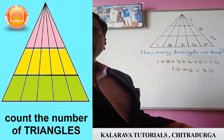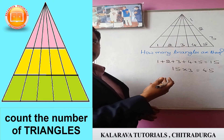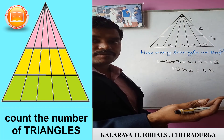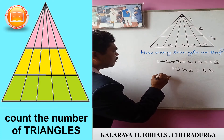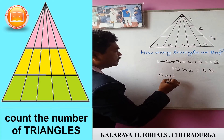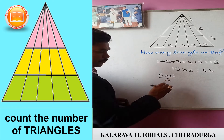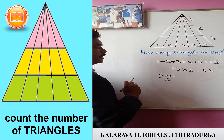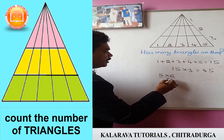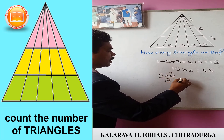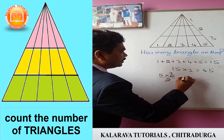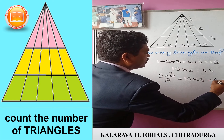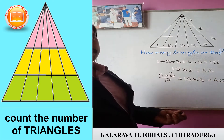There are 45 triangles. There is another method: here it is 5, take the next number of 5, which is 6. So 5 into 6 divided by 2. 5 into 6 — next number of 5 is 6. So 5 into 6 divided by 2 gives 5 into 3, which is 15. Multiplied by the 3 parts gives you 45 triangles.